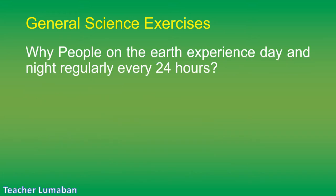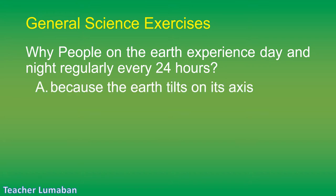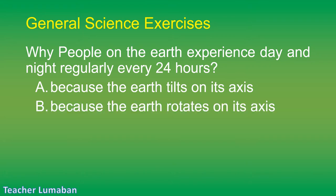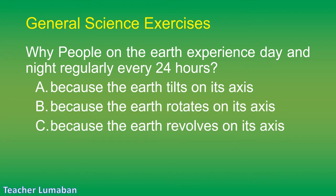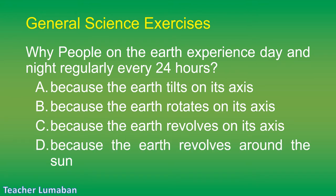Why do people on Earth experience day and night regularly every 24 hours? Letter A: because the Earth tilts on its axis. Letter B: because the Earth rotates on its axis. Letter C: because the Earth revolves on its axis. Letter D: because the Earth revolves around the sun.